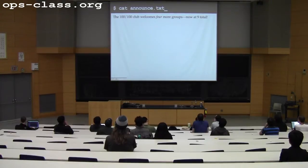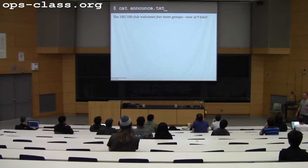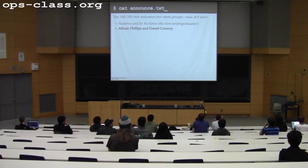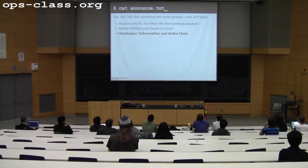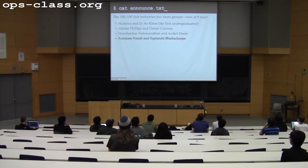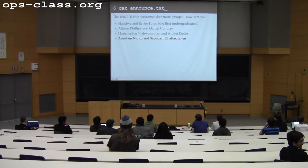We have four new groups in the 100-100 club — so now we have nine total. Harioa and Aaron Kuhn — missing their big moment — the first undergraduates to finish assignment three. Allison Phillips and Dan Conway, Harishankar and Anaket, and Arundam and Saptarshi — congratulations. I'm really impressed. There's still a lot of time to go.